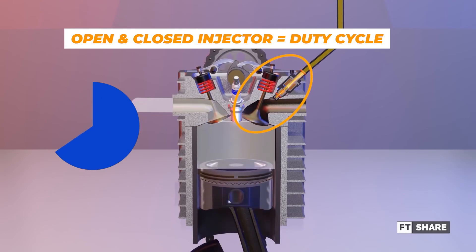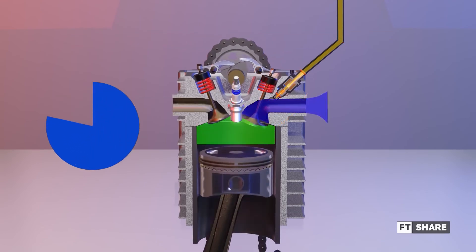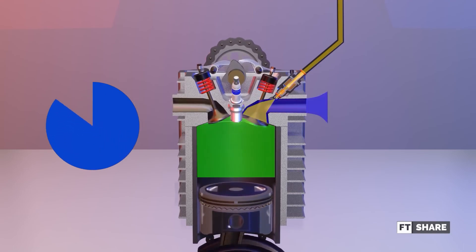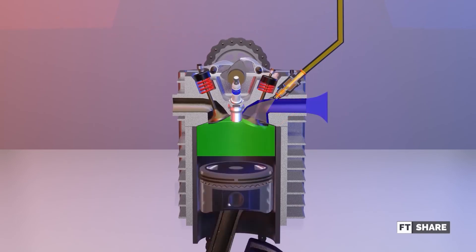So, the percentage of injector opening will be calculated as the duty cycle percentage, which is based on one power cycle in a four-stroke engine. This means that the duty cycle at different RPMs will also result in different pulse widths.